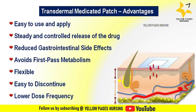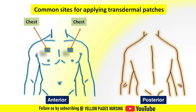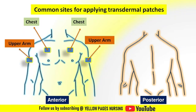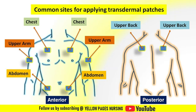The common sites for applying transdermal patches may vary according to the type of medication. They include the chest (upper chest area below the collarbone), the upper arm (front or back), the abdomen (lower abdomen away from the waistline), the upper back (between the shoulder blades), and the hip (side of the body near the hip area). The site of application depends on the medication used.